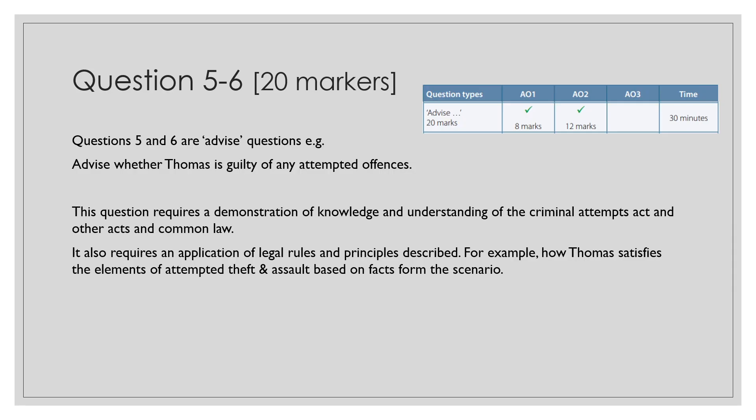The 20 marker questions are advise questions — for example, 'advise whether Thomas is guilty of any attempted offences.' Examiners assess AO1 and AO2: AO1 is worth 8 marks and AO2 is worth 12 marks. This question requires demonstrating your knowledge of the Criminal Attempts Act and common law, which is past precedent, as well as application of legal rules — for example, how Thomas satisfies the elements of attempted theft and assault by applying the actus reus and mens rea to the scenario.